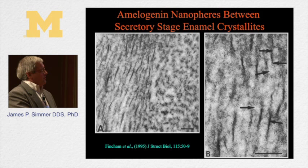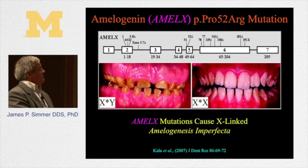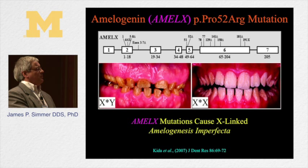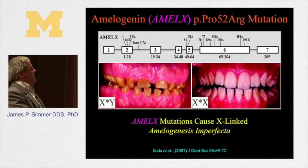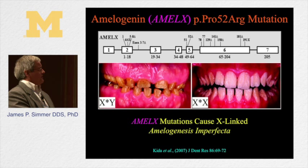The whitish spheres visible in this image are amelogenin helping to support the mineral ribbons. When one allele is defective, women get a milder phenotype because they have two X chromosomes and only one will be defective. Some ameloblasts — maybe half or more — are producing amelogenin properly and the other half aren't. In males, all X chromosomes are defective and so there's just a very thin layer of enamel. You see this difference in severity between males and females, with characteristic vertical banding in females.